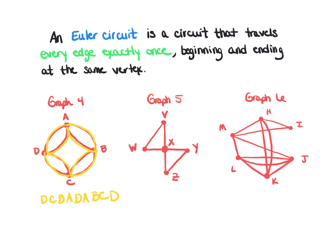Looking at graph number five, I'll pick vertex V at the top as the starting point. From V I'll travel to W, then to X. At X I have a choice, but I cannot go back to V yet because then I'd be stuck — I couldn't reach the other three edges without retracing steps. So from X, I'll travel to Y, then to Z, then back to X, and last but not least back to V. I began and ended at V, making this a circuit.